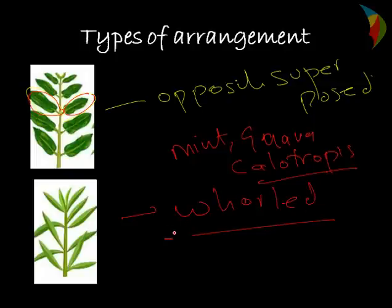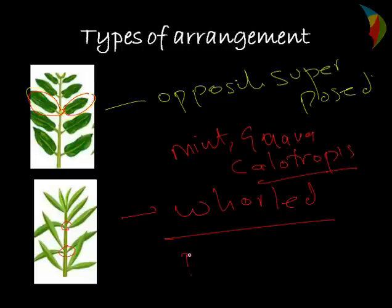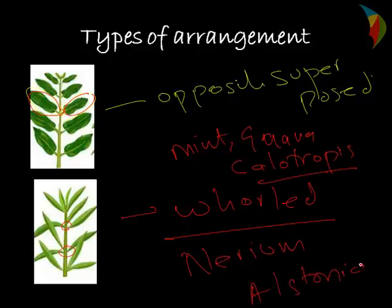In whorled phyllotaxy, more than two leaves arise from a single node of the stem. Examples are Nerium and Alstonia. In an upcoming session, we will discuss the modification of leaves. Thank you.